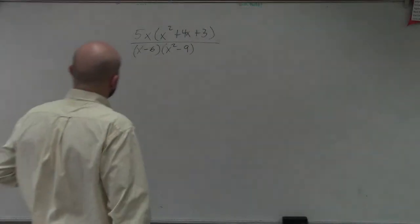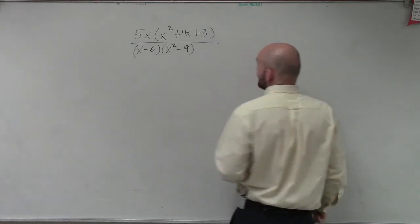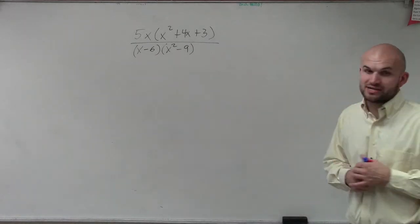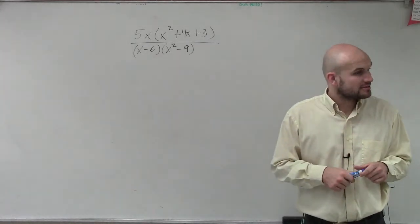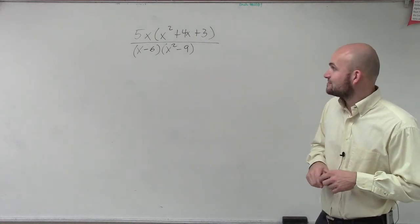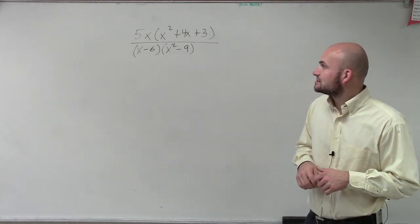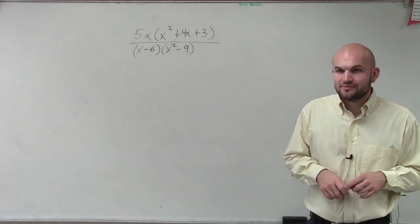All right, so in this example, I have 5x times x squared plus 4x plus 3, and what I'm going to do is I'm going to have x minus 6 times x squared minus 9.